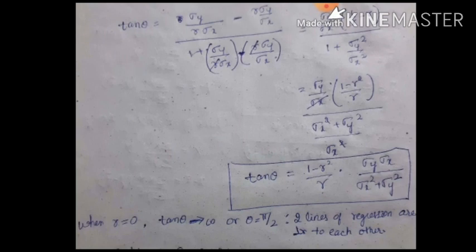m2 minus m1, 1 plus m1 m2 substitution. Here sigma y sigma x is taken common. What is left out? 1 by r minus r. Here r times r get cancelled. Sigma y whole squared divided by sigma x whole squared. And if you take numerator next step LCM, in the numerator you get 1 minus r squared divided by r.